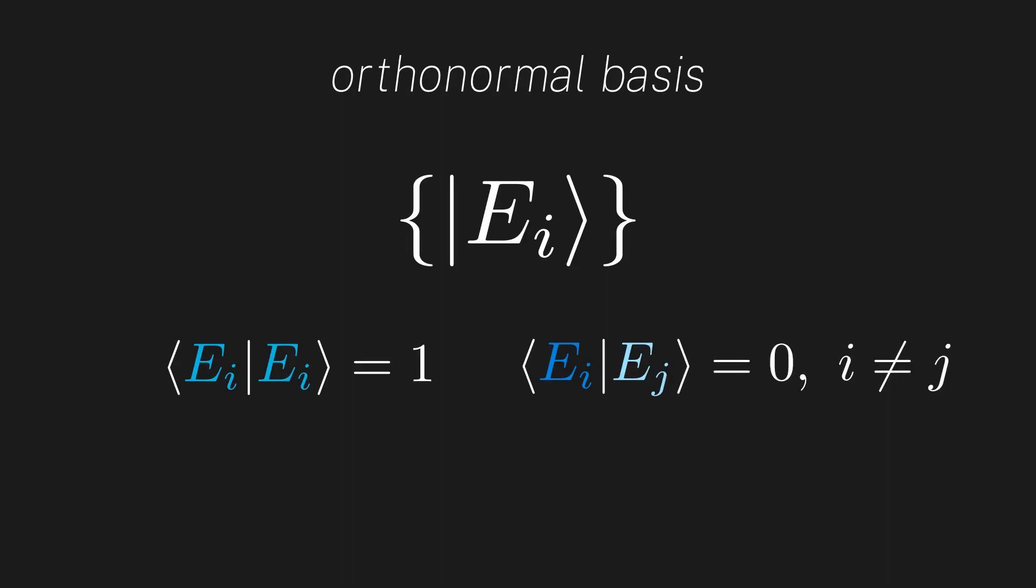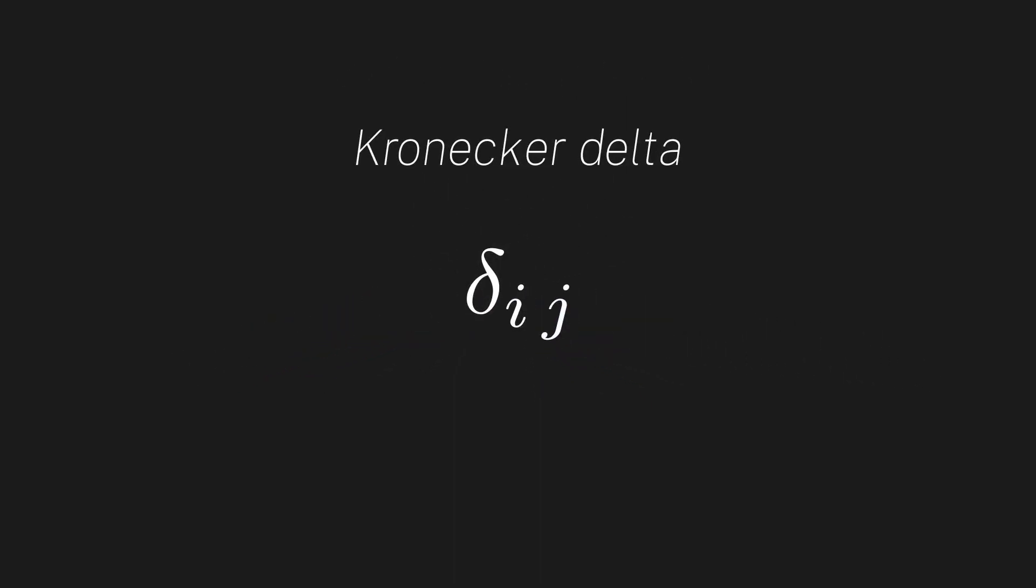It's common for physicists to combine these two conditions into 1 using the Kronecker delta. The Kronecker delta is a very simple object with two indices. When the indices match, it equals 1, and when they don't, it equals 0. So, the orthonormal condition can be condensed into one statement. Check yourself to see that this is true.